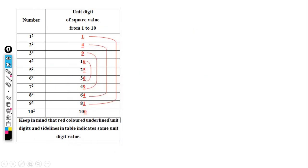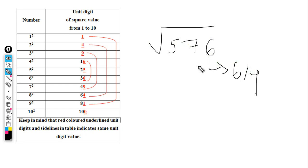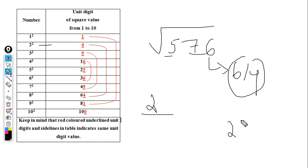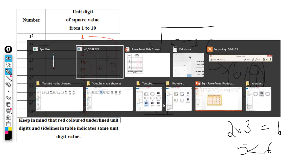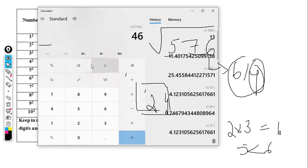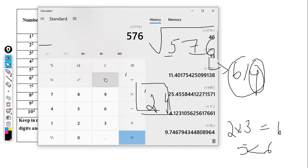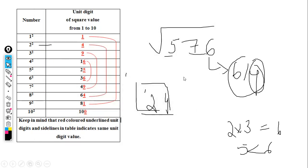Okay, clearly for the number 5763 — or 576 — the unit digit is 6. We know 4 squared equals 16, so the unit digit of the answer is 4. The number is 24. The square root of 576 equals 24. That is the correct answer.